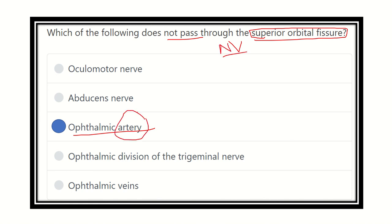So the ophthalmic artery does not pass through the superior orbital fissure.